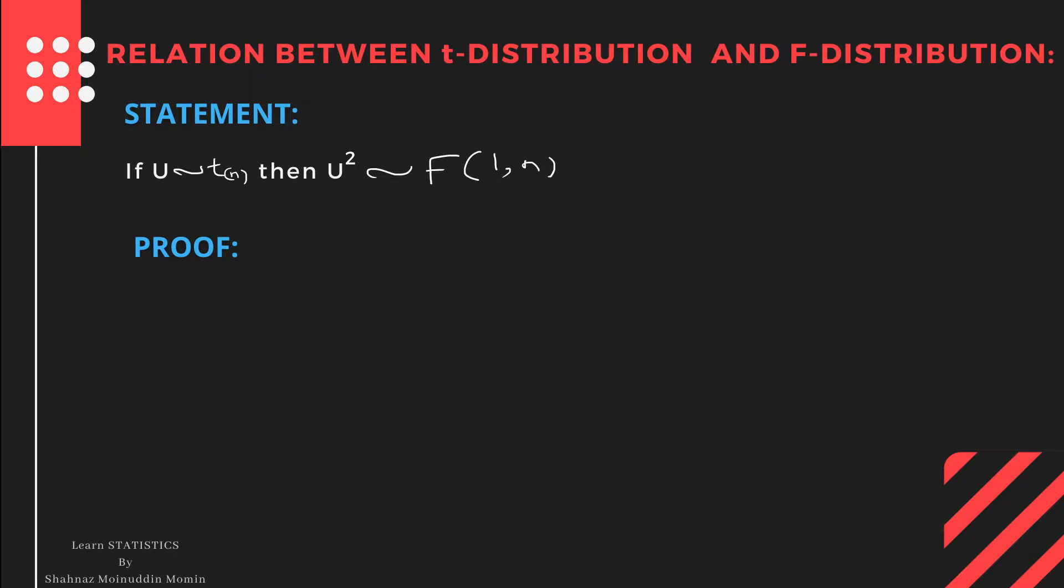Now, we will prove it. Suppose, let Z follow normal with mean 0 and variance 1. That means Z is a standard normal variate.